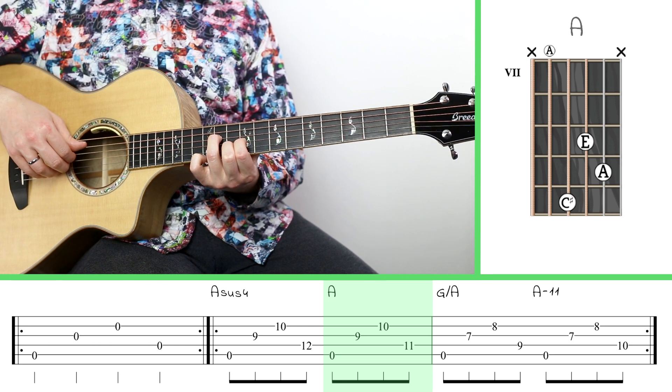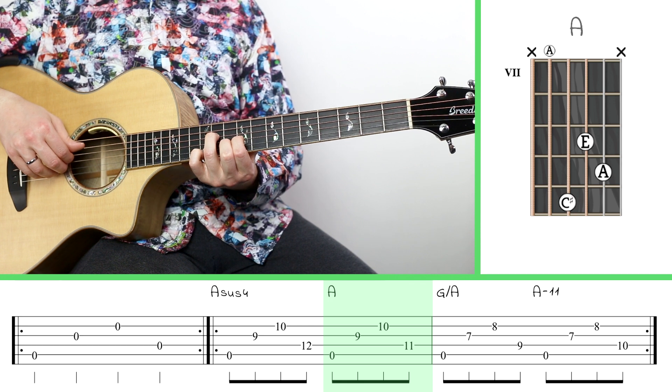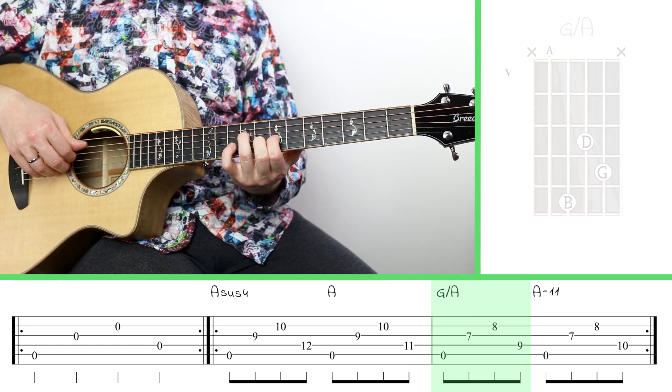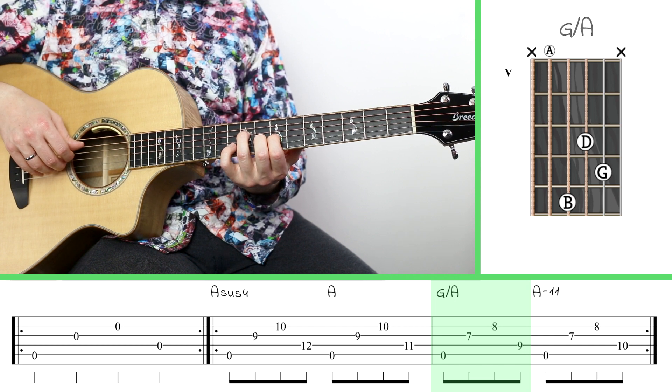Now you're going to love this—most guitar players do—you can actually recycle a lot of shapes. I'm going to take that shape, move it down two frets, and now I've got my next chord, which is a G over A.